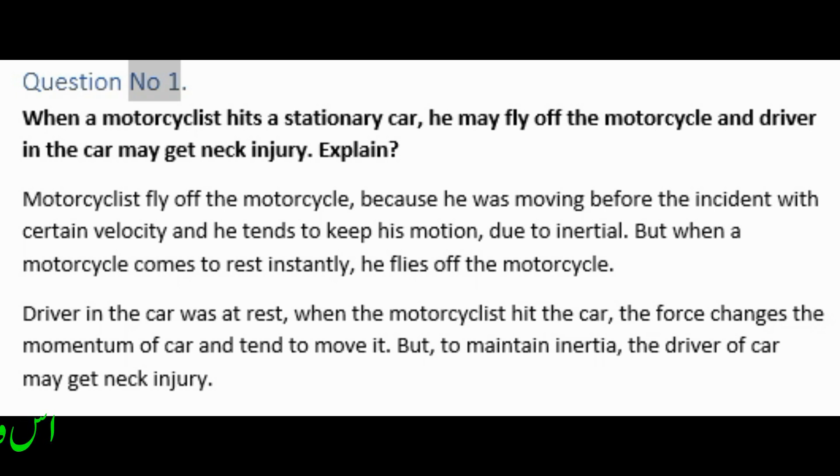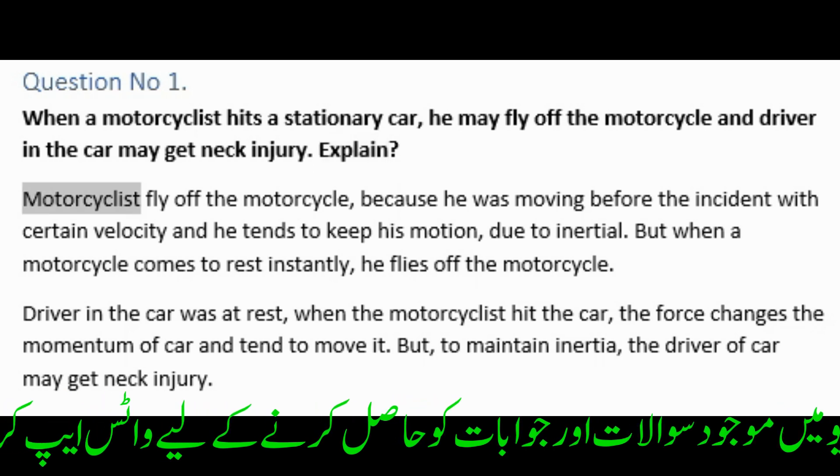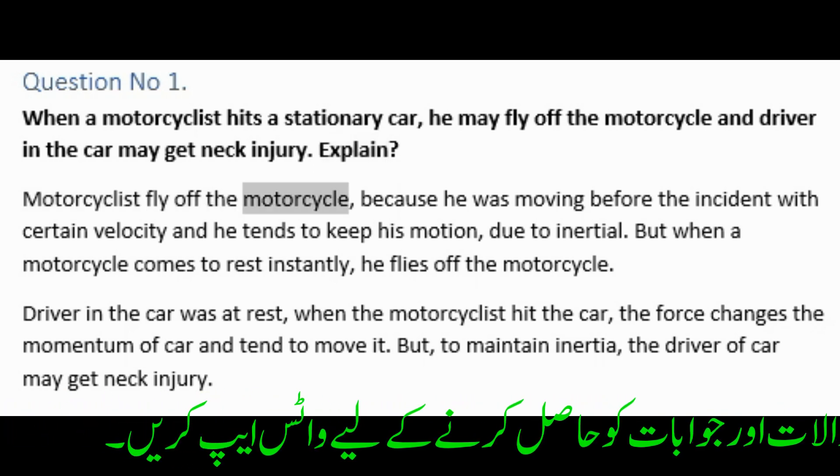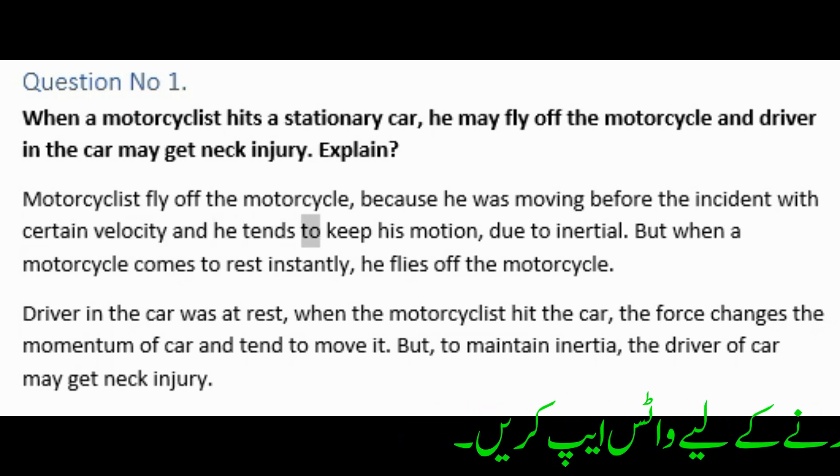Question number one: When a motorcyclist hits a stationary car, he may fly off the motorcycle and the driver in the car may get neck injury. Explain. The motorcyclist flies off the motorcycle because he was moving before the incident with certain velocity and he tends to keep his motion due to inertia. But when the motorcycle comes to rest instantly, he flies off the motorcycle.